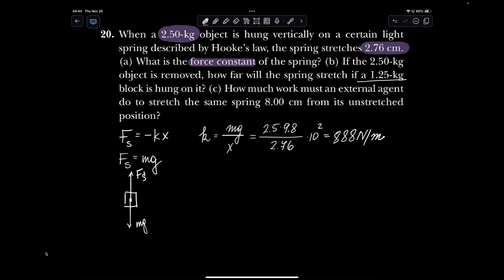In b, they're asking us to find x. Well, I'm just going to look at my force of spring still equal to mg and kx. Again, I'm just dropping minus because I know it's directional. So it's going to be 1.25 times 9.8 over k, which is 888 newtons per meter.